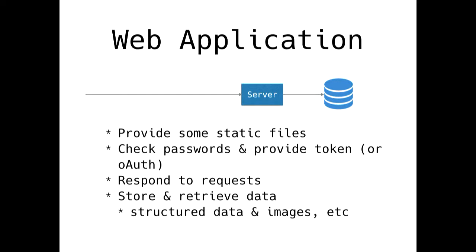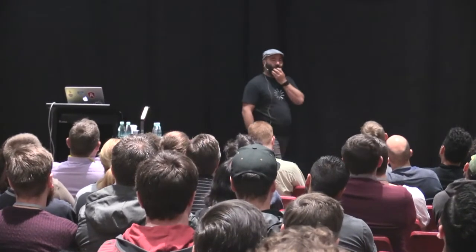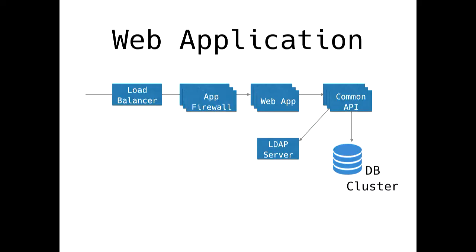At a really basic level, this is how most web applications work, ignoring the browser. We have a server that gives static files, has some business logic, responds to requests, and has a database. As we scale, things get more complex: we need a load balancer, application firewalls, a web app, a common API or application server, probably an LDAP server for authentication, maybe a database, and you're probably going to cluster your web app — maybe three servers in a cluster across multiple data centers. Things just get more and more complex.